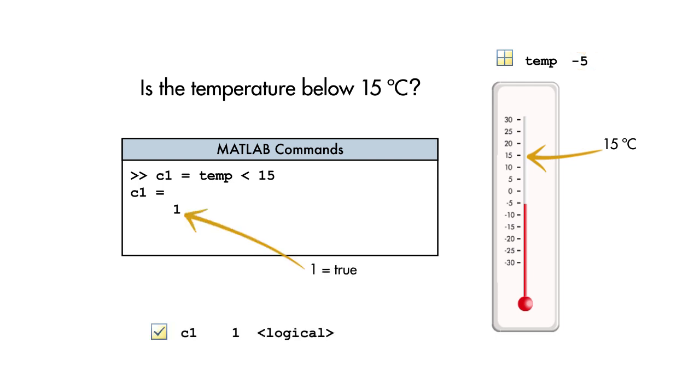Notice that the result is a logical variable, which can only take the value of true or false. True is represented by 1, and false by 0. In this case, the result is 1, because the condition is true.